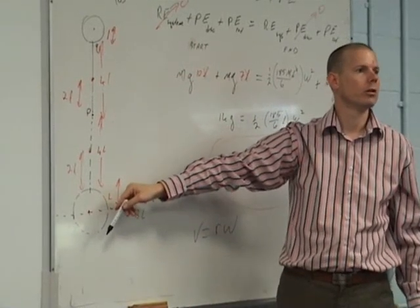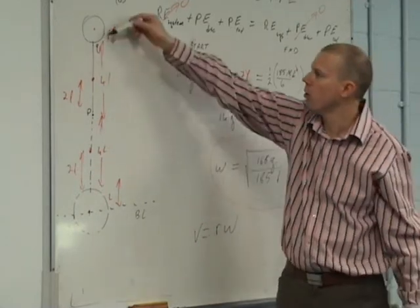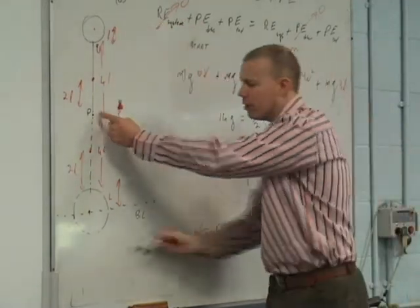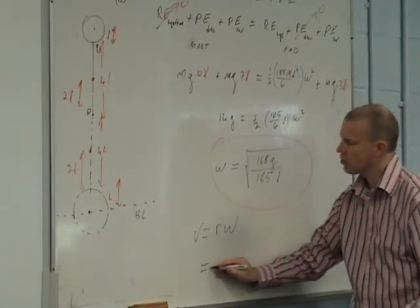V equals R omega. So that's the linear velocity which I'm looking for, is equal to the radius times the angular velocity. The angular velocity is constant no matter what point you're on, because it's all tracing out an angle to get from there to there.